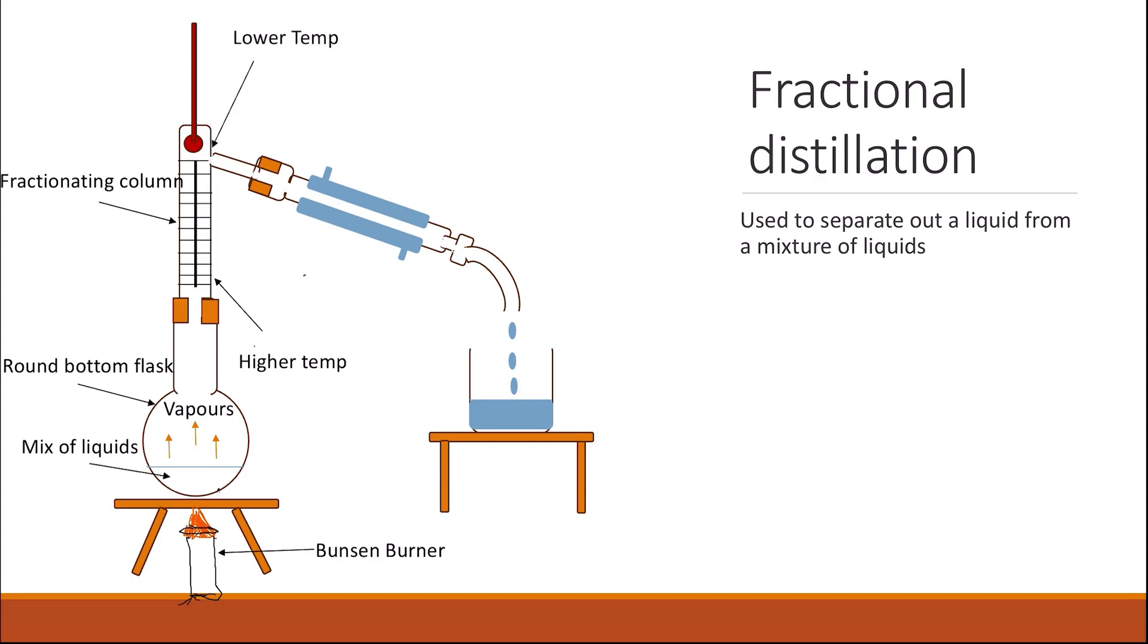So what happens is when you have a mixture of liquids with different boiling points, the one with the highest boiling points will start to vaporize and stay as vapors at the bottom of the fractionating column. But as they reach the top of the fractionating column, they will condense and then they will be going back into the solution.